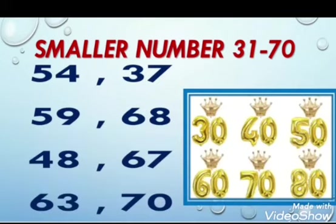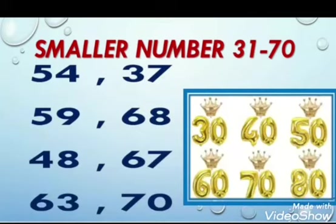Another example — which is the smaller number: 48 or 67? My dear students, look at this example carefully. In the first number 48, 4 is tens and 8 is ones. In the second number 67, 6 is tens and 7 is ones. Tens are also different here.